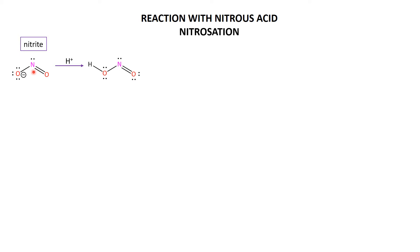So nitrite plus HCl or sulfuric acid makes nitrous acid. Now nitrous acid is a relatively weak acid, but you've still got a nice strong acid in there.